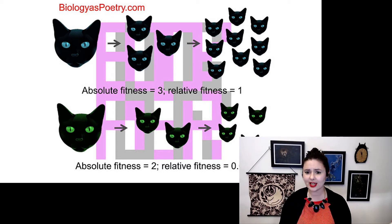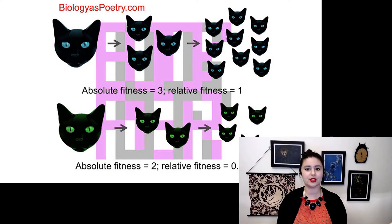And our green-eyed cats, they have fewer children. So we would divide four by nine because nine would be the most number of offspring. And we get relative fitness of about 67%. So these are two ways we can quantify fitness because if we want to be able to model something, we need to be able to put it into numbers.